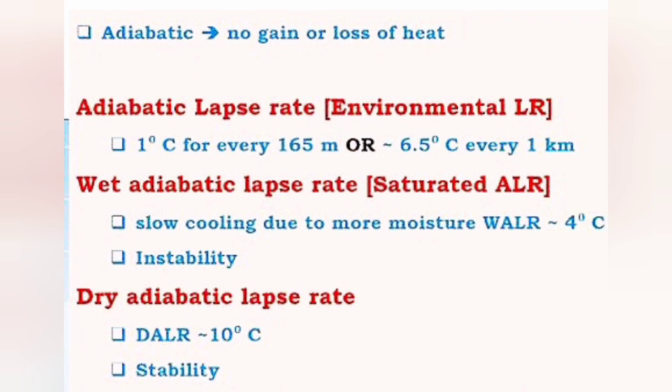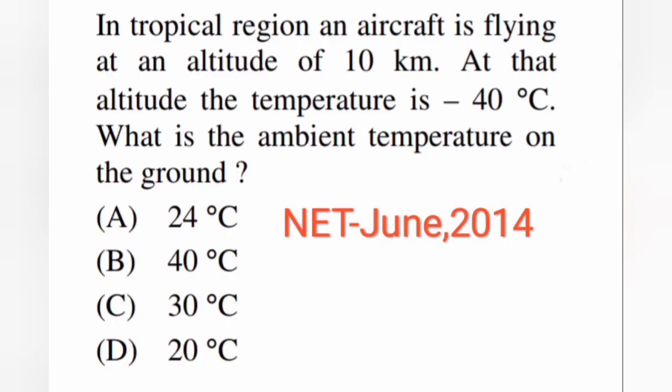So there was a question asked in June 2014: in a tropical region an aircraft is flying at an altitude of 10 kilometer. At that point the temperature was minus 40 degree celsius. So what is the ambient temperature on the ground? Let's see how this question will be solved.